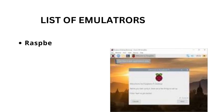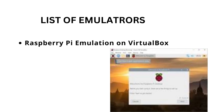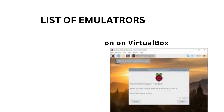The second one is Raspberry Pi emulation on VirtualBox. You can set up a virtual machine using VirtualBox and run a Raspberry Pi compatible operating system on it. This method allows you to test your projects in a virtualized environment, which can be useful for development.